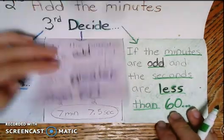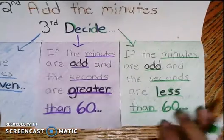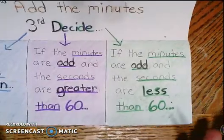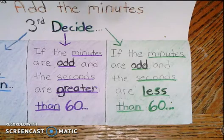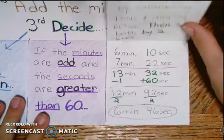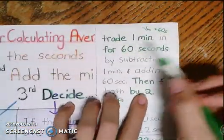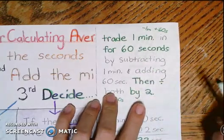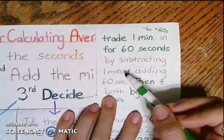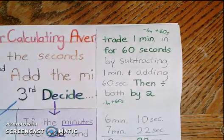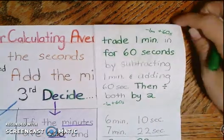But wait, Mrs. Williams, what if the minutes are odd but the seconds are less than 60 and I don't have enough to take away 60 seconds and make a minute? Well, then what we do is we trade a minute in for 60 seconds. And I do that by subtracting a minute and then adding 60 seconds. And then, of course, we will divide both by two.